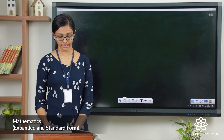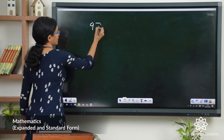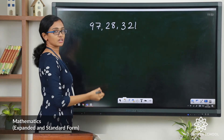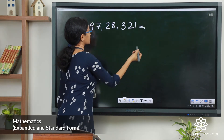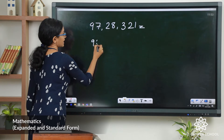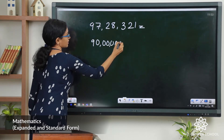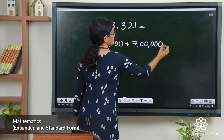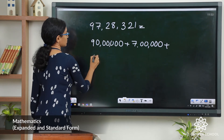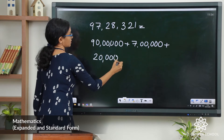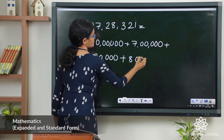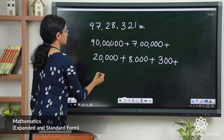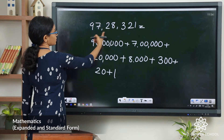Let us see the first question from question 1a. It is 97,28,321. Let us see how we can write the expanded form for this number. This equals — the place value of 9 is 90 lakhs, plus 7 has the place value of 7 lakhs, plus 8 lakhs, plus 2 has the place value 20,000, plus 8,000, plus the place value of 3 is 300, plus 20, plus 1. So this is the expanded form for this number.